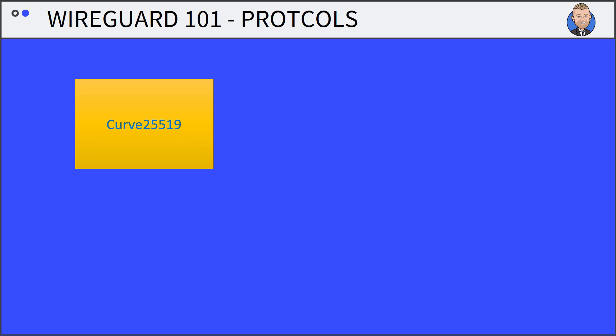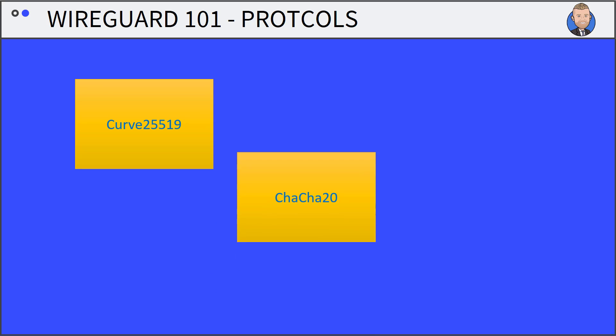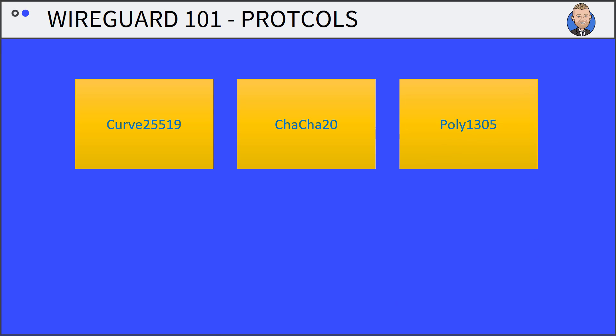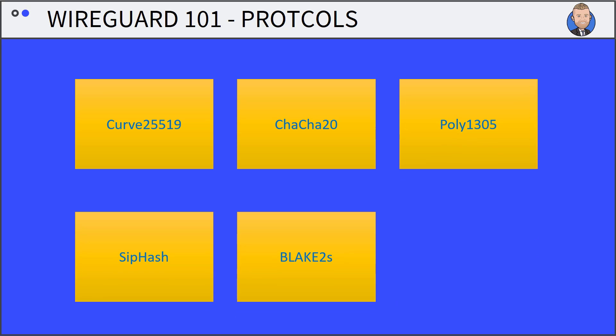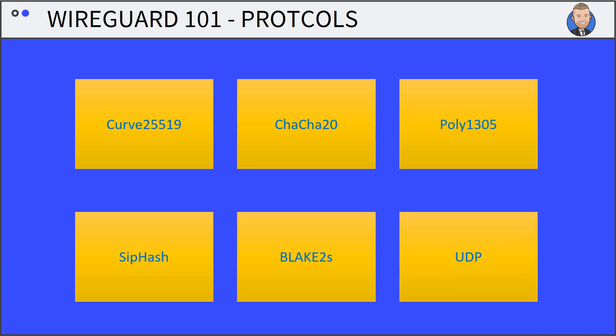WireGuard protocols: Curve25519 is for key exchange. ChaCha20 is for encryption. Poly1305 is for data authentication. SipHash is for hashable keys. Blake2s is for hashing. It is also a UDP-based only protocol.